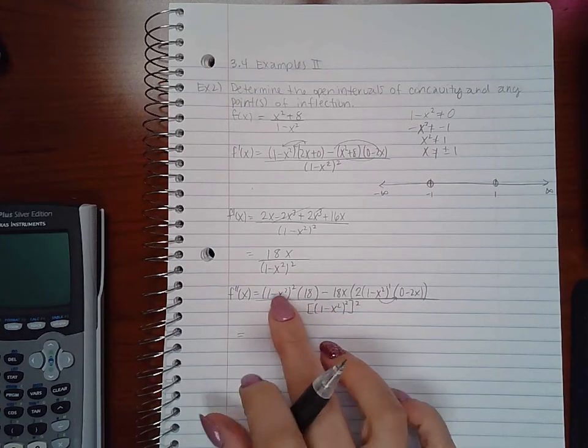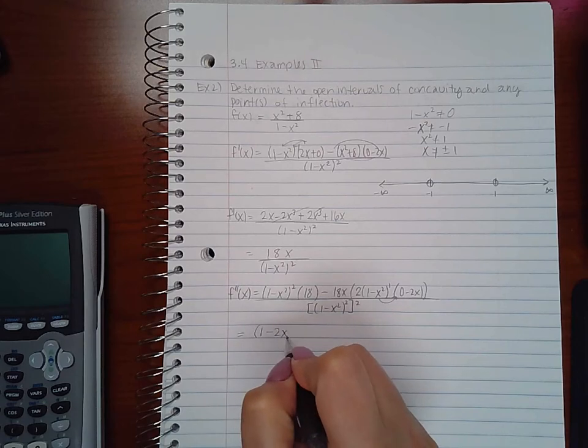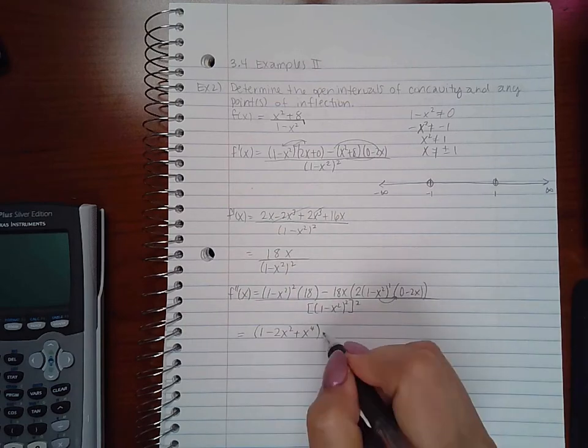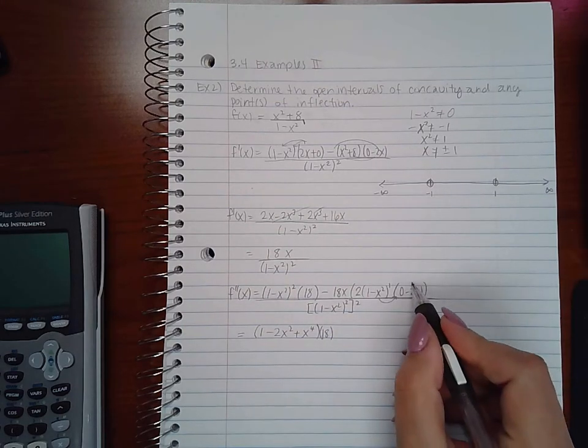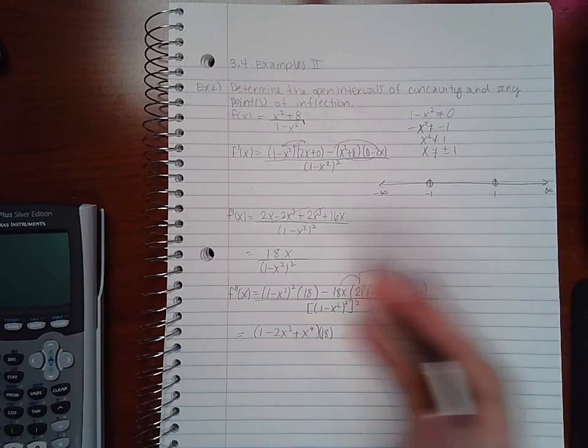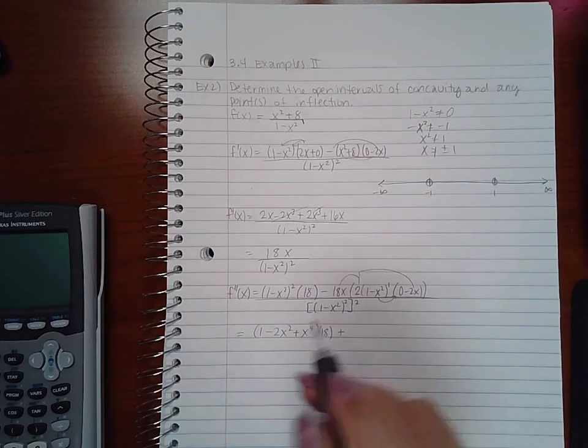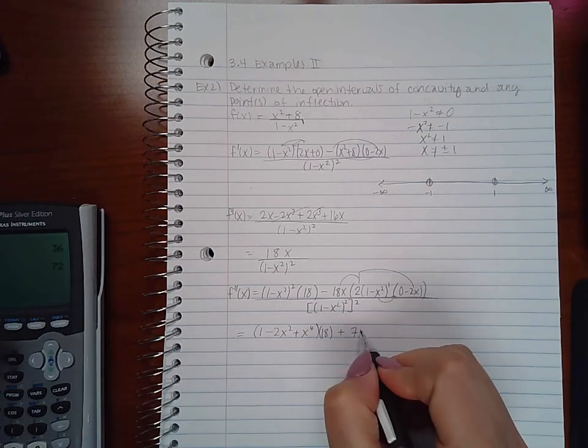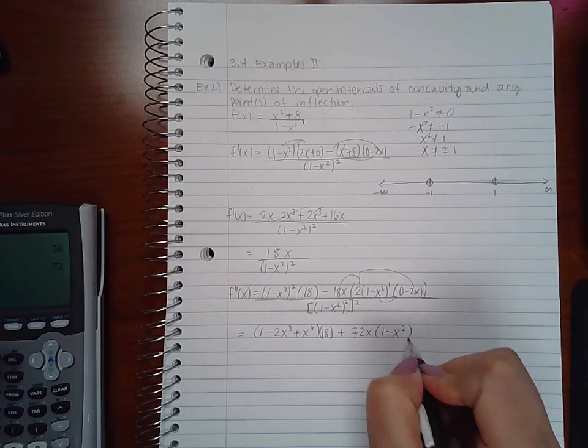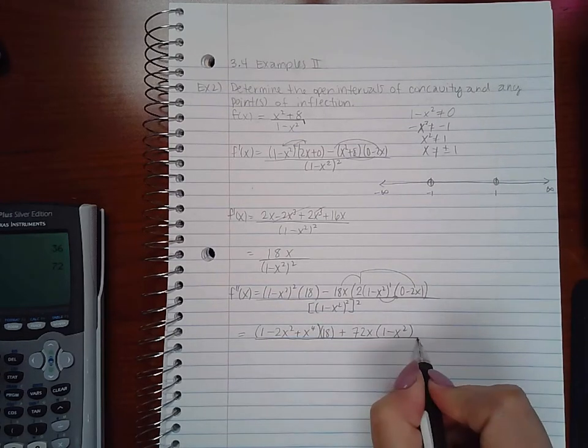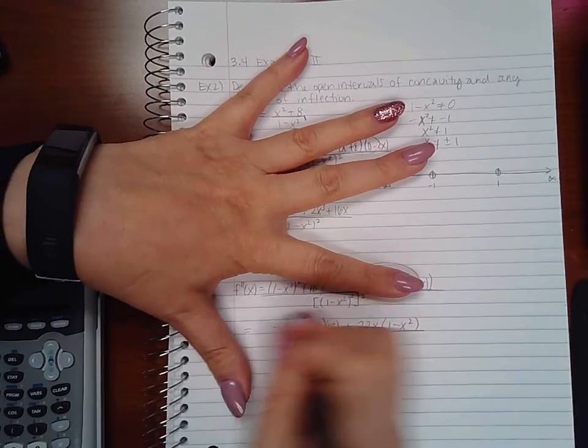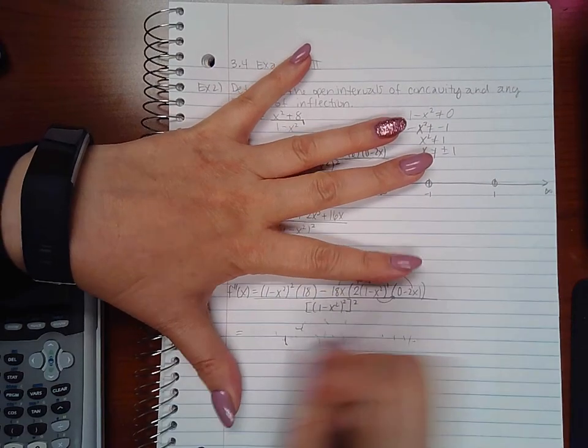So I end up with—I can expand this out so I will have (1 - 2x² + x⁴) times 18, and then here I can multiply all of these monomials together and I will get 72x(1 - x²). Actually, I think (1 - x²) will reduce, so we probably should do that first because you notice that each term has a (1 - x²) in it.